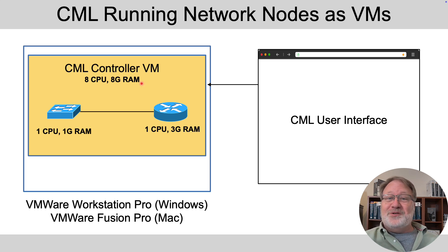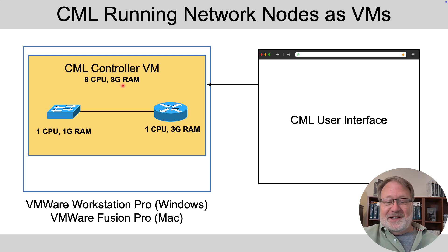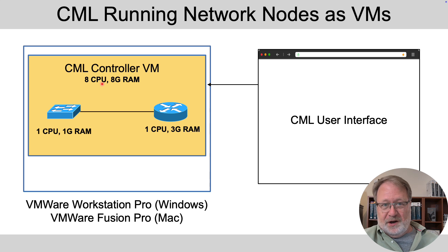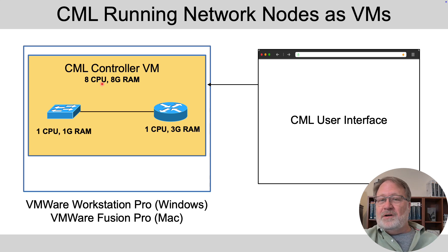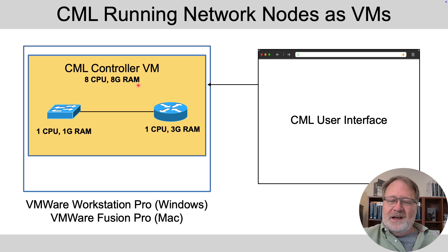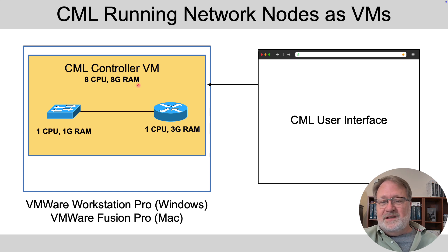In this case, two total CPUs and four total gig of RAM are being used by the network devices out of the eight CPUs and eight gig assigned to the controller. So you can see if you try to run 20 nodes with CML Personal, you're going to run out of eight gig of RAM and eight CPUs long before you reach 20 nodes. You need more CPU and RAM to take advantage of CML Personal and Personal Plus.